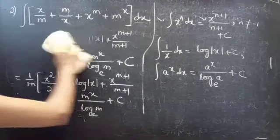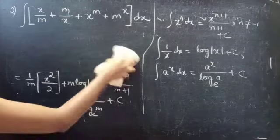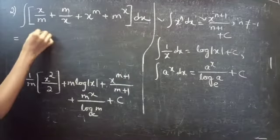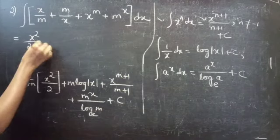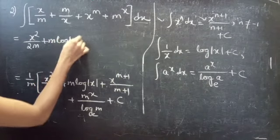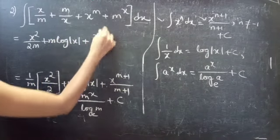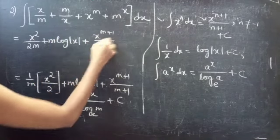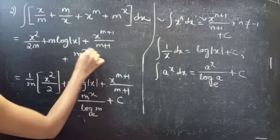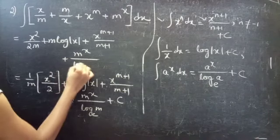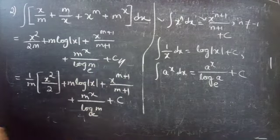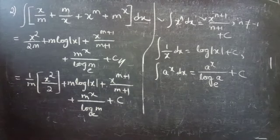Simplifying, since you have (1/m) times x^2/2, that becomes x^2 divided by 2m. The complete answer is: x^2/(2m) plus m log|x| plus x^(m+1)/(m+1) plus m^x divided by log m to the base e, plus c. This completes the second problem.